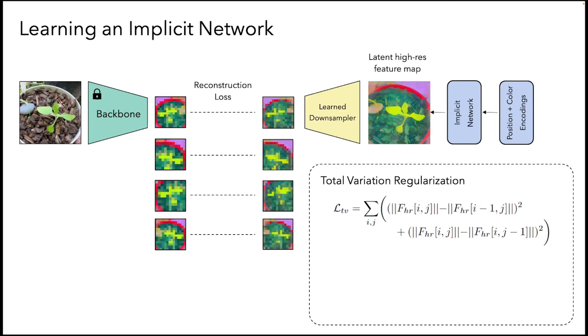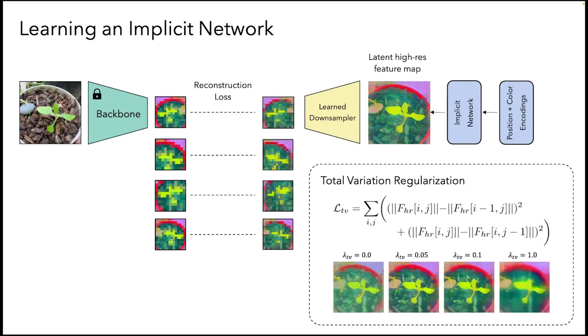In addition to MSE, FEEDUP is trained on a total variation smoothness prior on the feature magnitudes. By penalizing large differences in neighboring feature magnitudes, we reduce noise and create more cohesive feature maps.